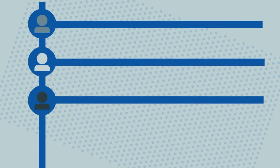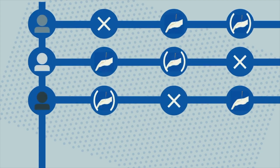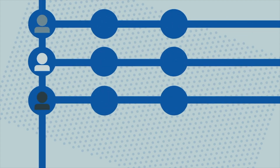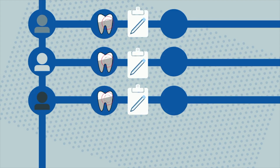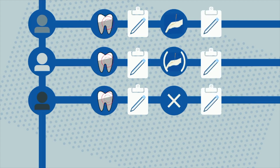The participants received all three interventions at a separate visit, and the order of interventions was randomized. At each visit, dental pain was induced electrically using individually fabricated dental splints. The resulting pain intensity was rated by the participants on a validated scale. The procedure was repeated after the participants completed either real acupuncture, control acupuncture, or the passive control.